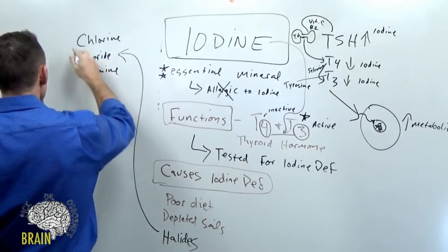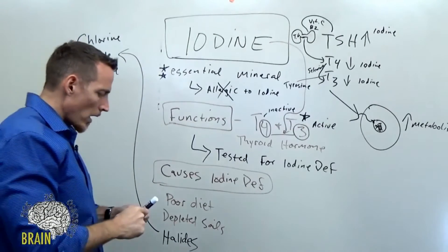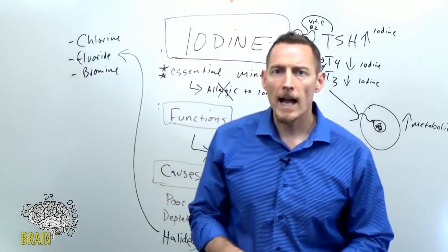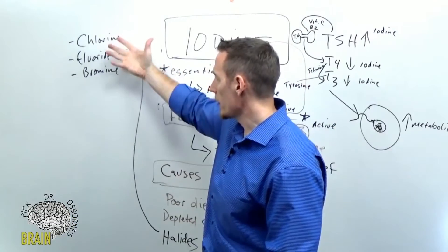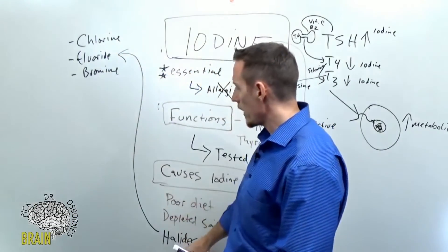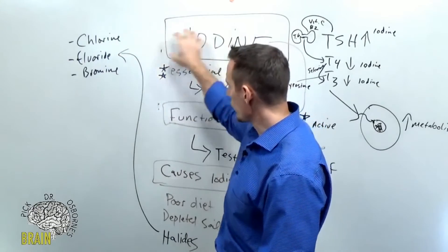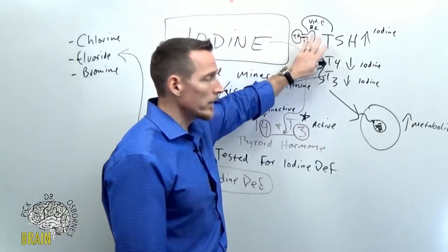So what are halides? Well, I mentioned chlorine earlier, but we've also got fluoride and then bromine. So these three compounds, chlorine, fluoride, bromine, commonly found in our environments today, actually are all classified in that halogen group or that halide group. Now iodine is also a halide, so iodine is part of that group. So these four things compete with each other for uptake into your thyroid gland.